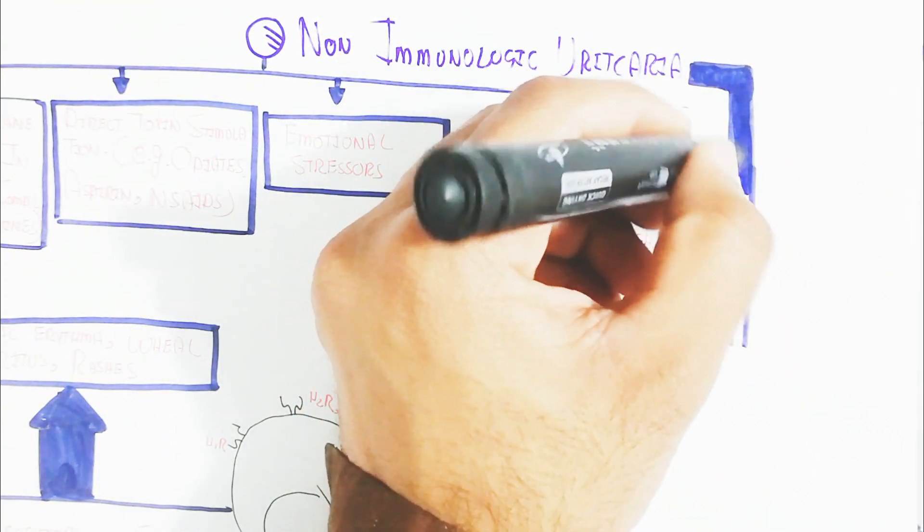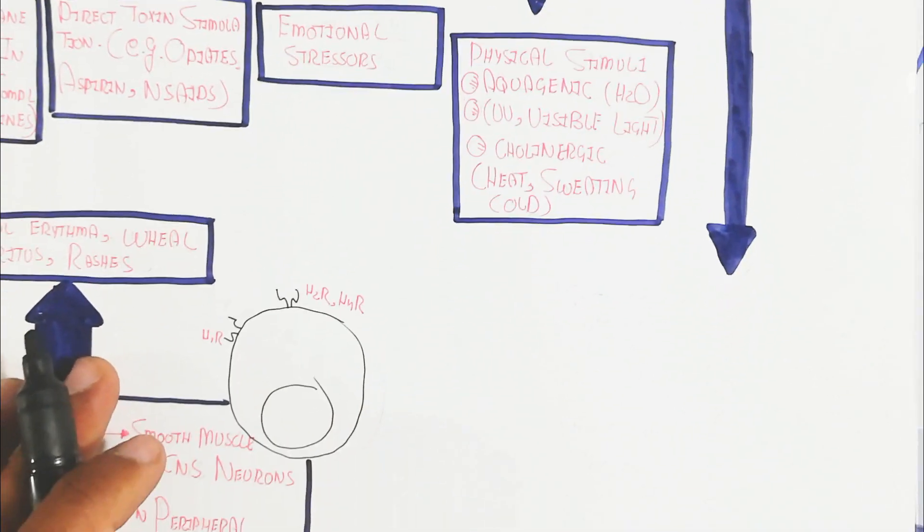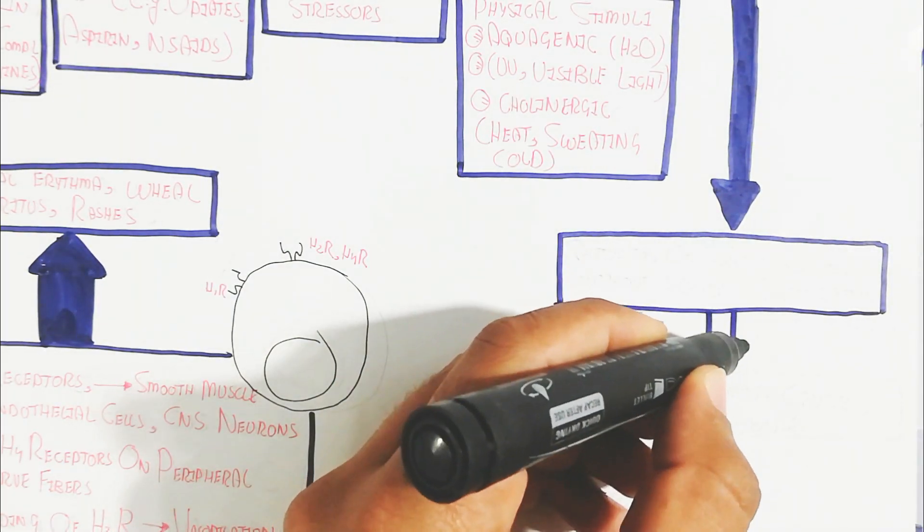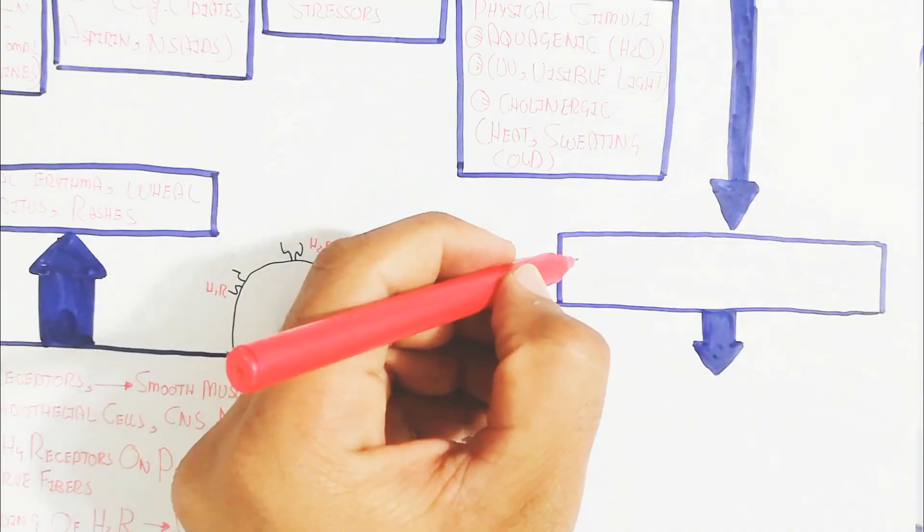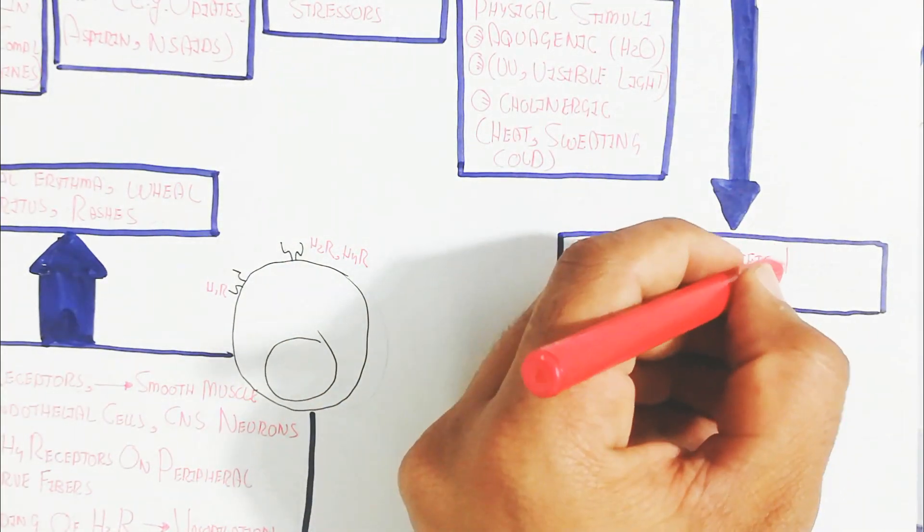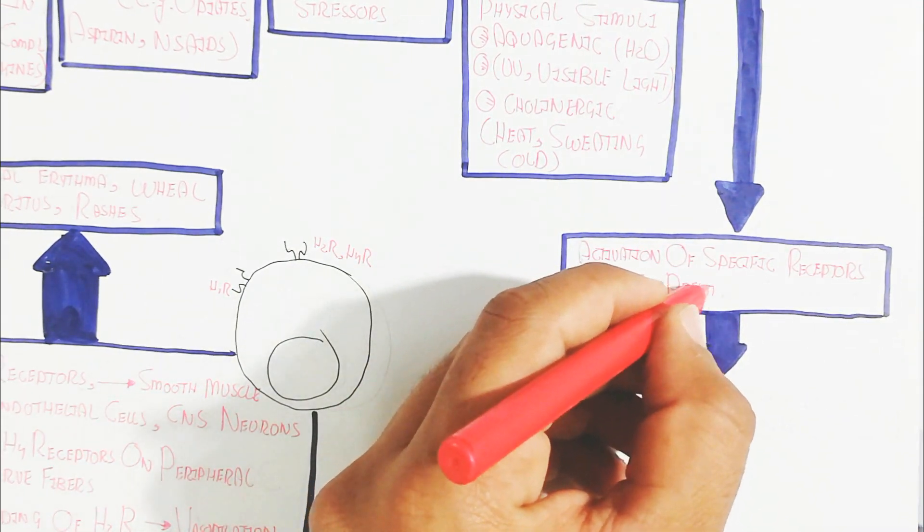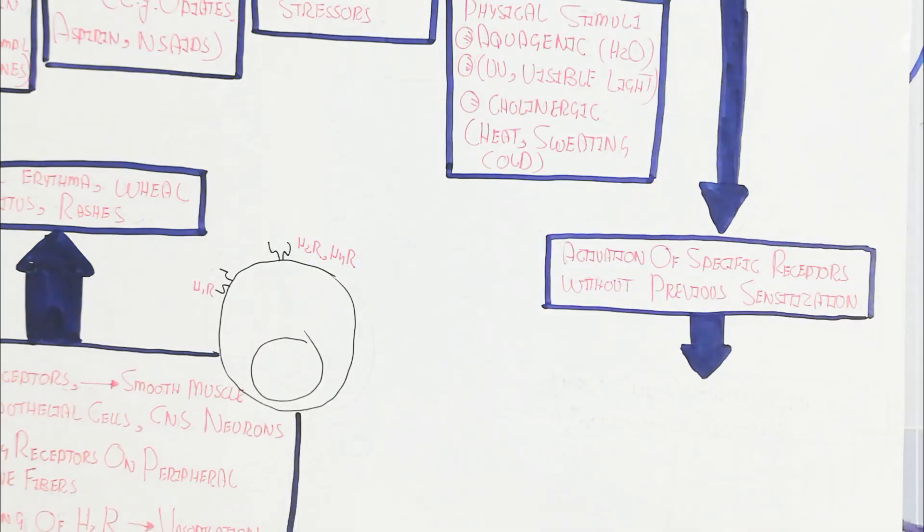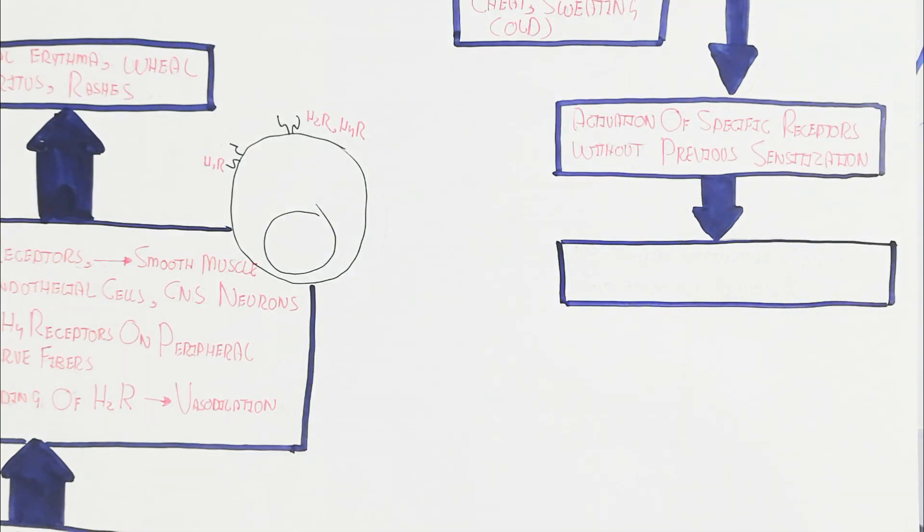This non-immunological urticaria basically will lead to activation of specific receptors without previous sensitization. So without previous sensitization, mast cell activation causes inflammatory response. The mast cell ultimately activates.